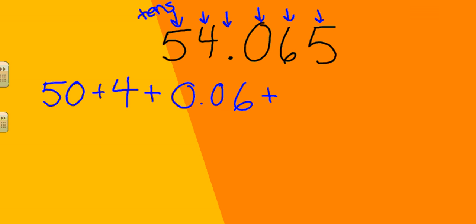Looking at the next digit, we come to a 5 in the thousandths place. We multiply 5 times 1 thousandth, which is equal to 5 thousandths, written as 0.005. In expanded form we have: 50 + 4 + 0.06 + 0.005. That concludes the lesson on writing numbers in expanded form — I hope this helps you out.